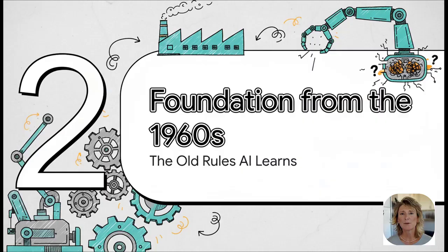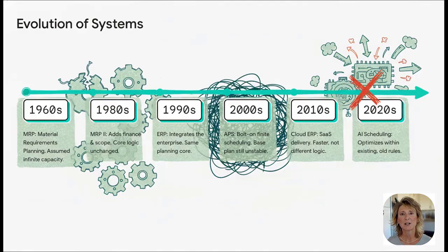You've seen this timeline, right? Over the last 60-plus years, we've had this constant parade of new acronyms. First, it was MRP in the 60s, then MRP2 in the 80s, then ERP, APS, Cloud ERP, and now the latest and greatest AI scheduling. On the surface, it looks like this amazing constant evolution. But if you peek under the hood, what was really changing?